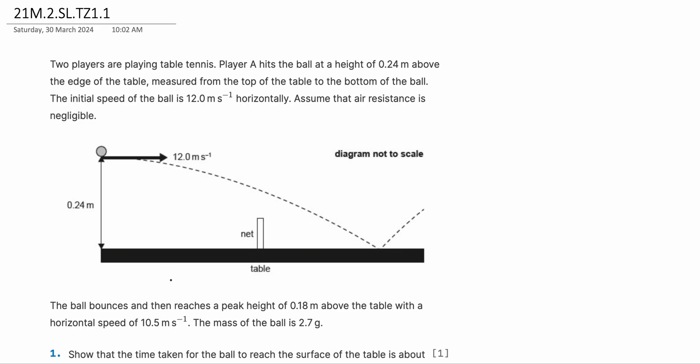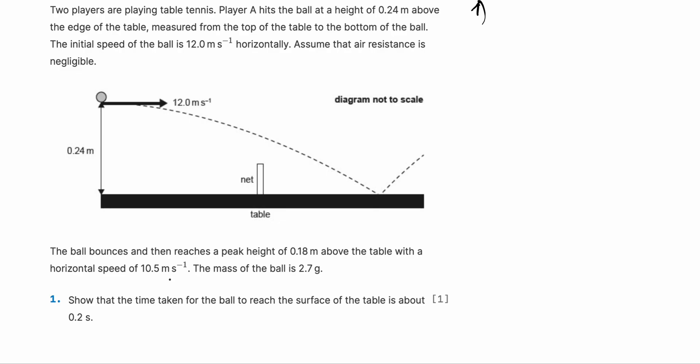The ball bounces and then reaches a peak height of 0.18 meters above the table with a horizontal speed of 10.5 meters per second. The mass of the ball is 2.7 grams. So let's do question 1. Show that the time taken for the ball to reach the surface of the table is about 0.2 seconds.